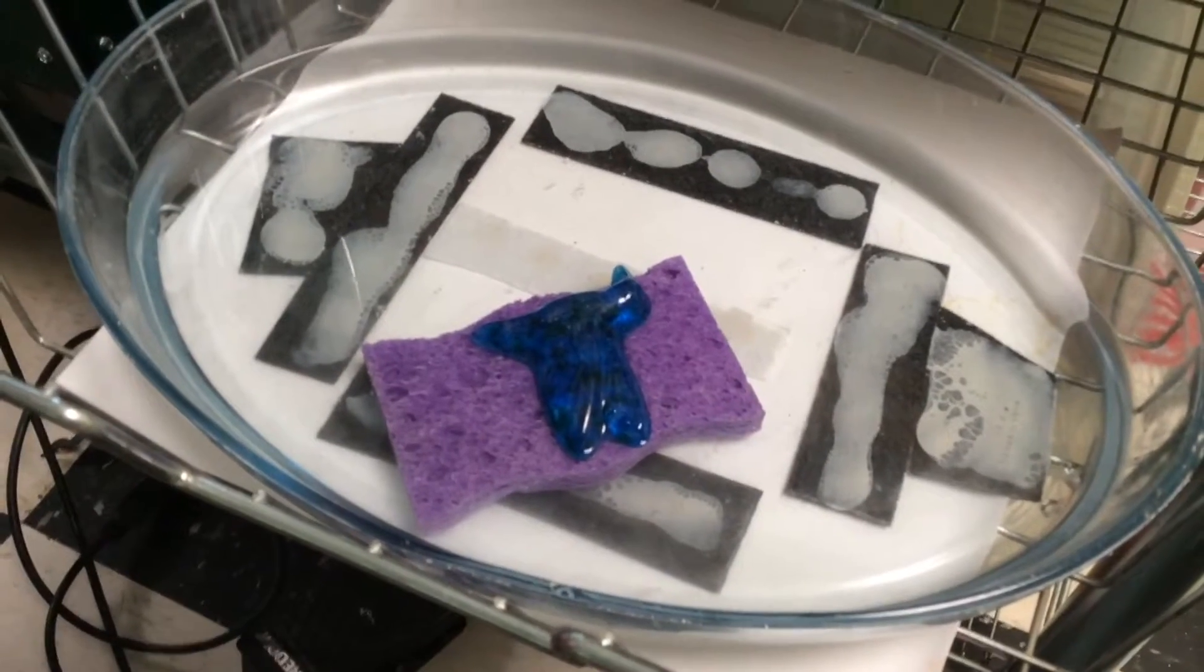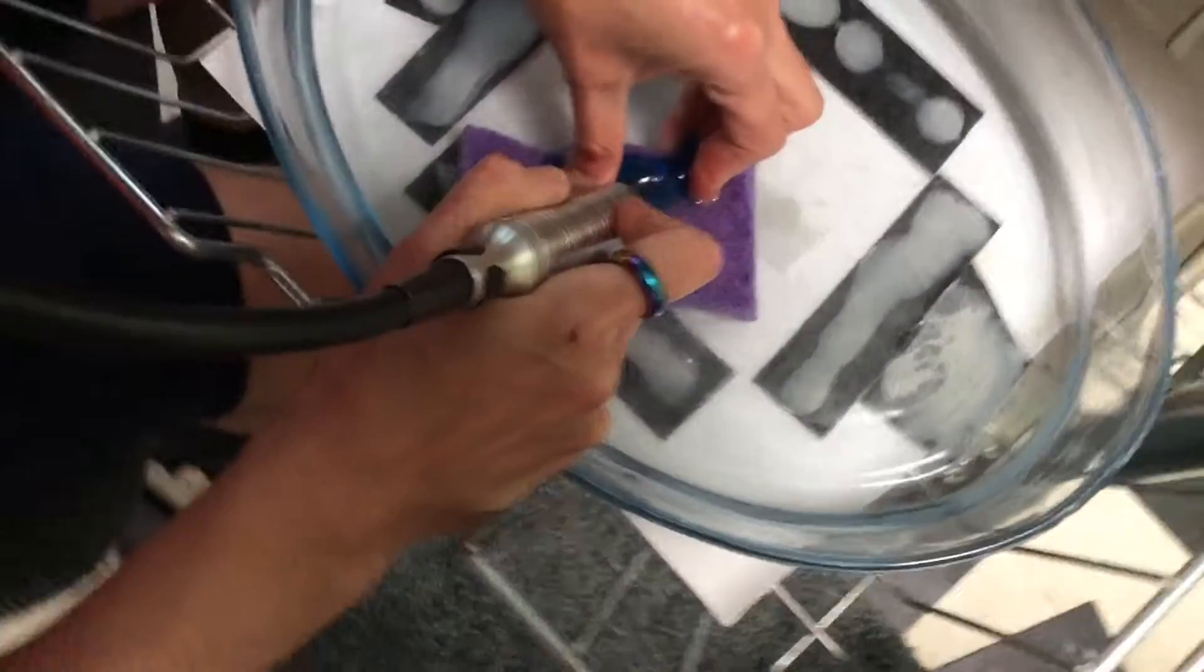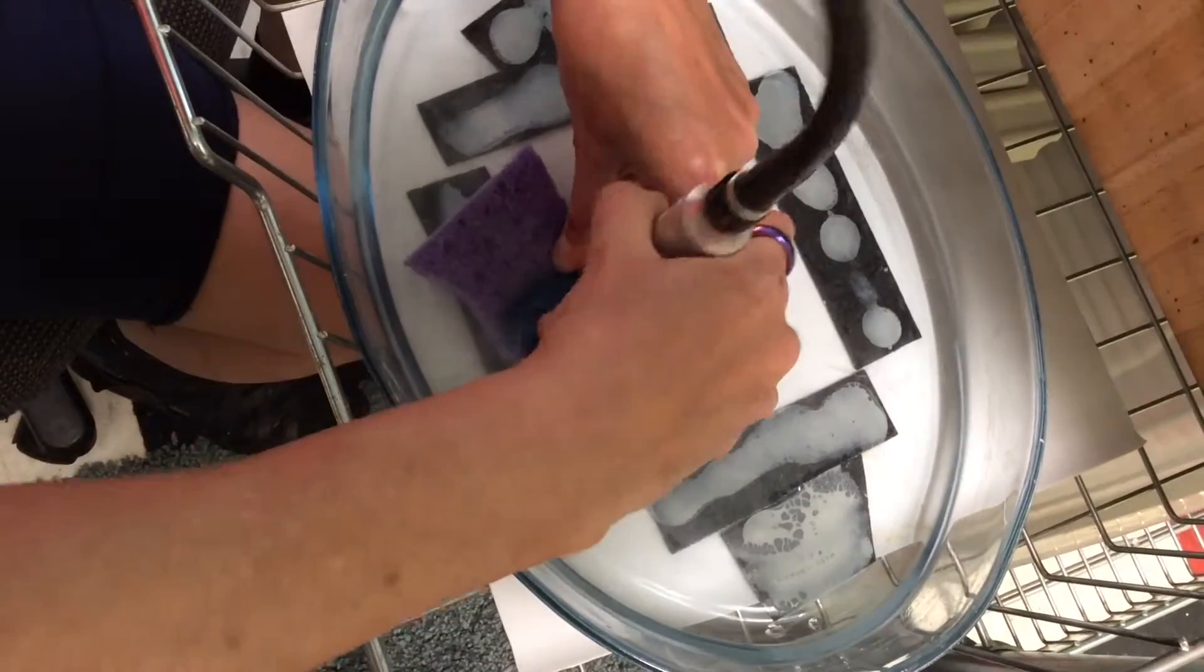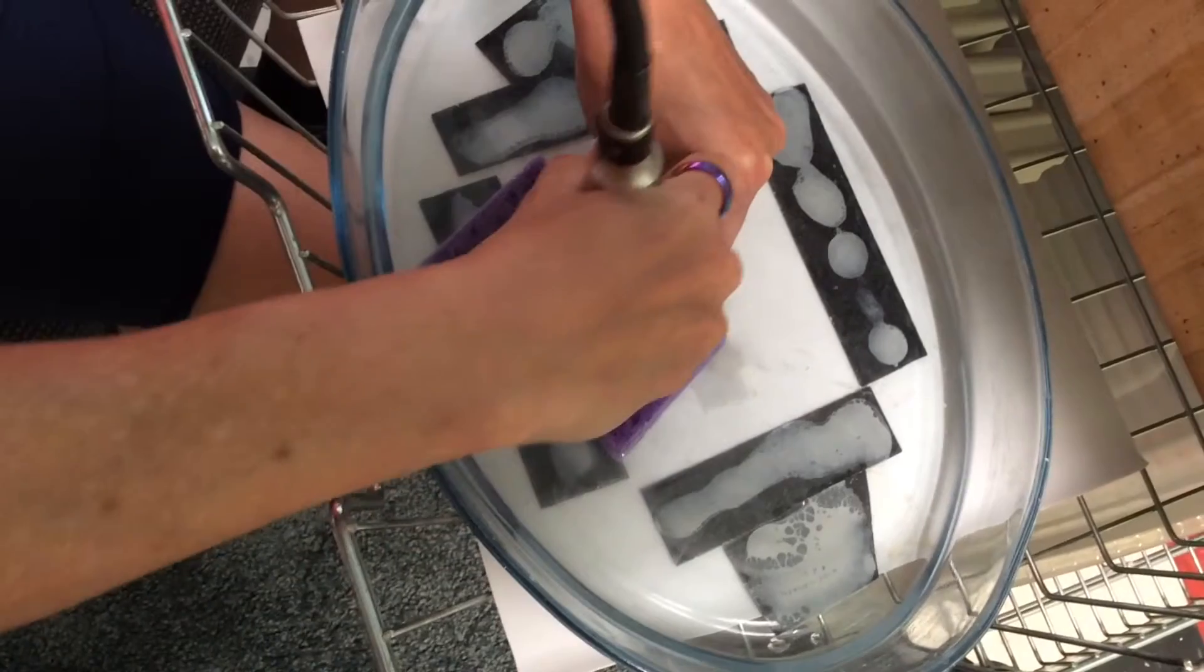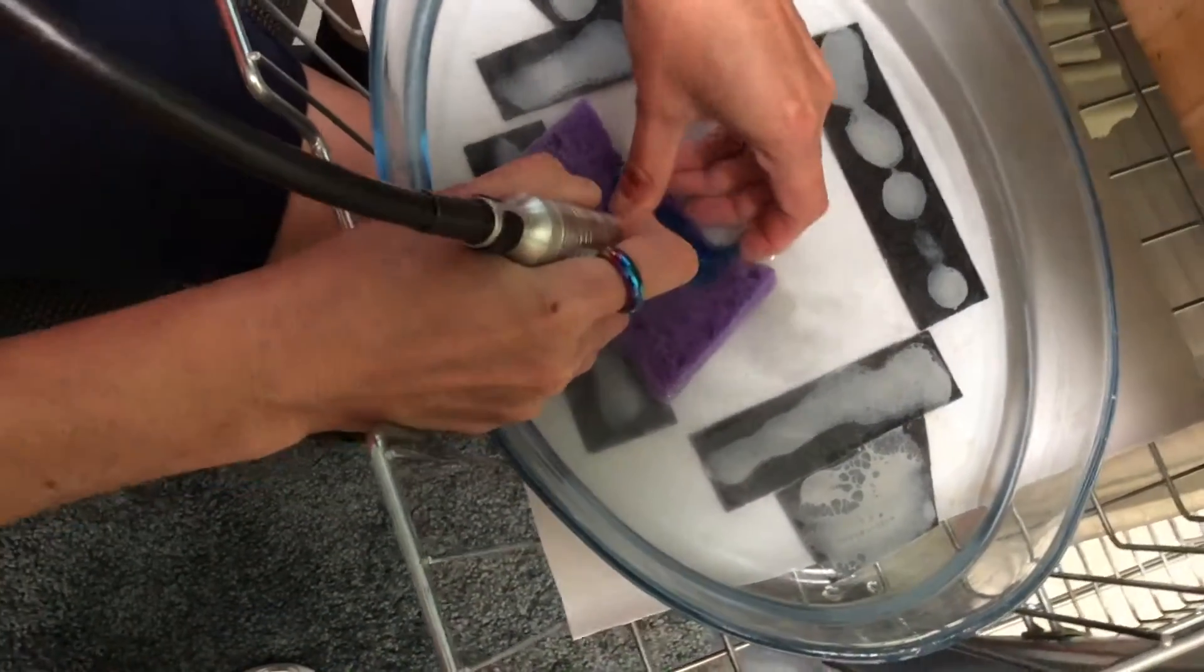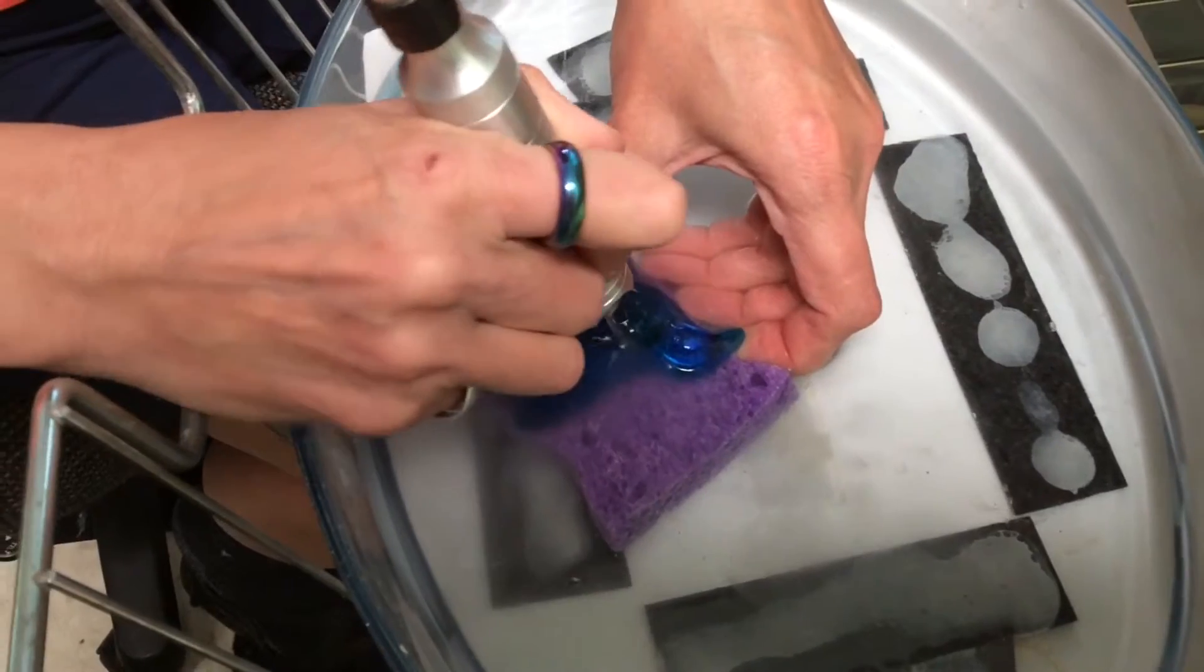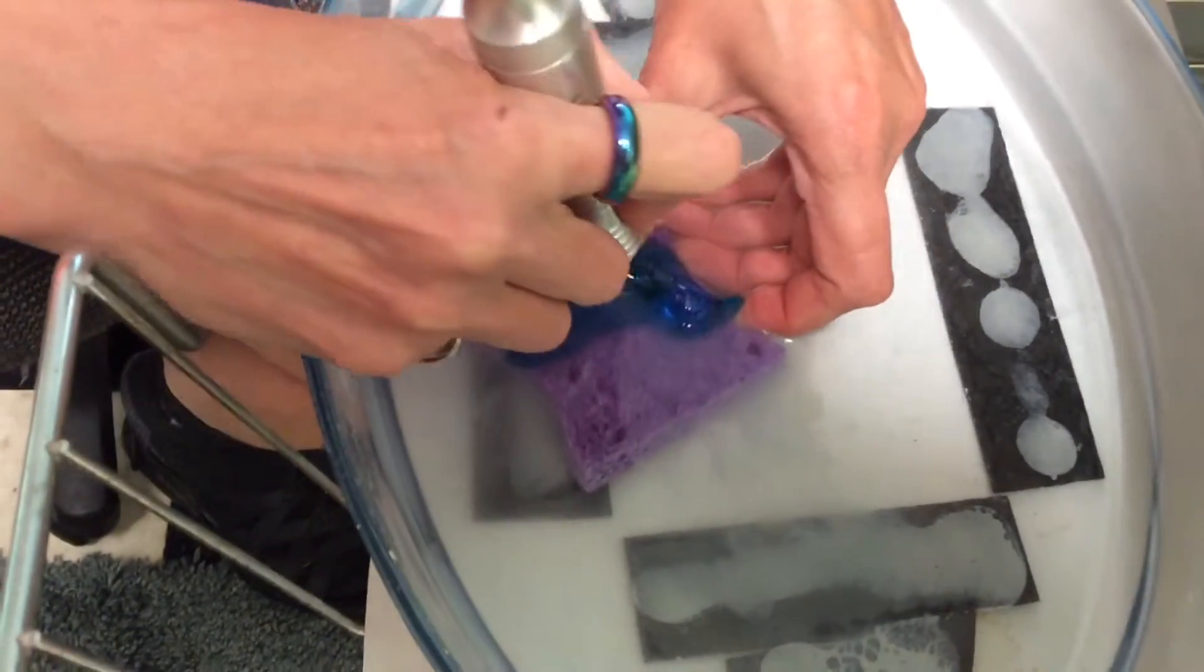You can use a Dremel, but I've never used a Dremel to drill. This is higher speed. We just move around. You can see the water getting cloudy from the glass dust.